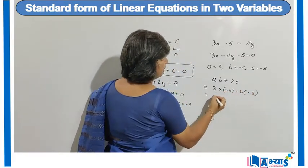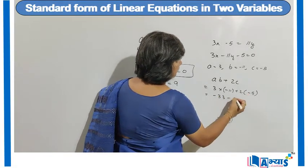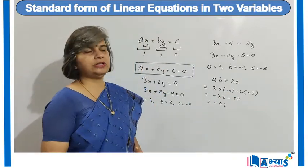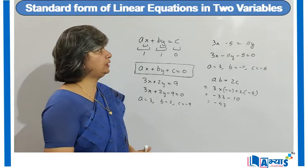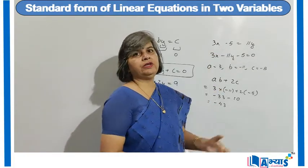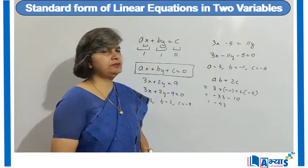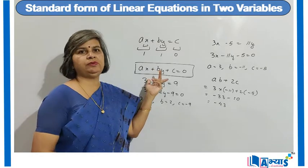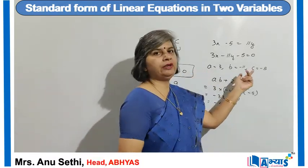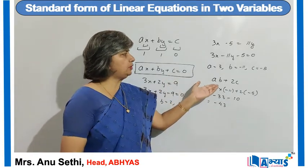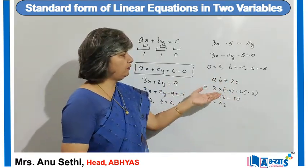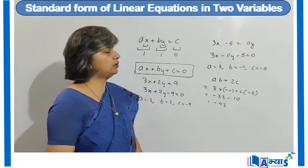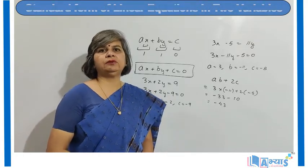So it becomes 3 times minus 11, which is minus 33, plus 2 times minus 5, which is minus 10. That gives minus 43. This is how we find the value of an expression in terms of A, B, and C when given a linear equation in two variables. We convert to standard form Ax plus By plus C equals 0, find the values of A, B, and C, substitute into the expression, and compute the solution — in this case, minus 43.